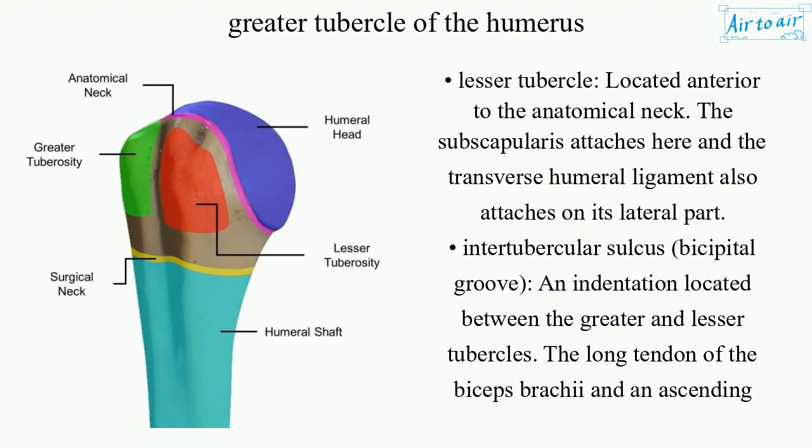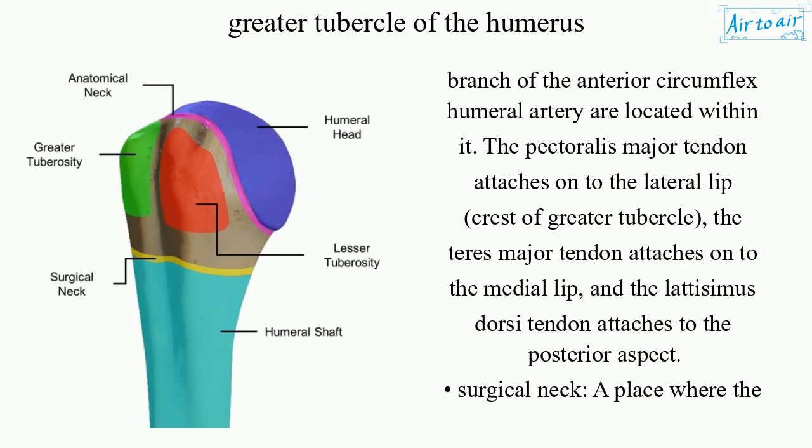The transverse humeral ligament also attaches on the lateral part of the lesser tubercle. The intertubercular sulcus, or bicipital groove, is an indentation located between the greater and lesser tubercles. The long tendon of the biceps brachii and an ascending branch of the anterior circumflex humeral artery are located within it. The pectoralis major tendon attaches to the lateral lip, the teres major tendon attaches to the medial lip, and the latissimus dorsi tendon attaches to the posterior aspect.